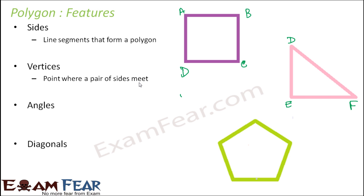Vertices, these are the points where a pair of sides meet. So for this one, points A, B, C, D, E, these are the vertices. For this triangle, point D, E, F are the vertices. For this pentagon A, B, C, D, E, the vertices are points A, B, C, D, E. Because A is a point where the sides AB and AE meet. Similarly, B is a point where the sides AB and CD meet. So all these points are the vertices.